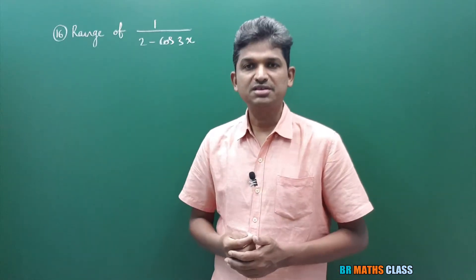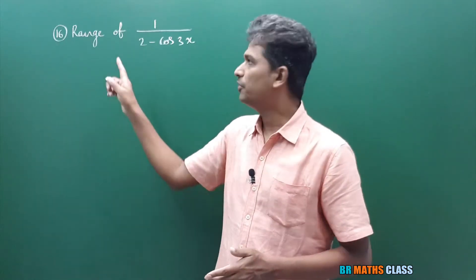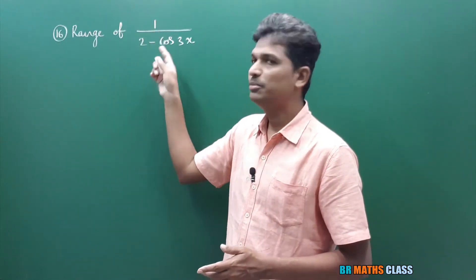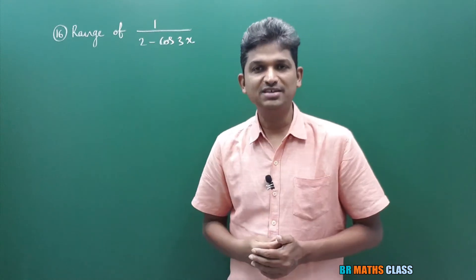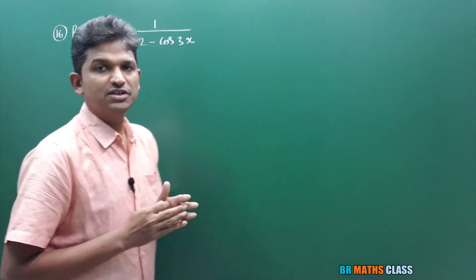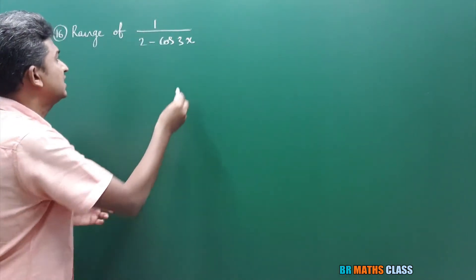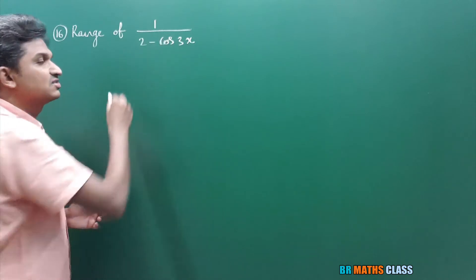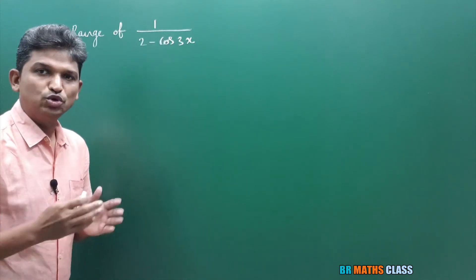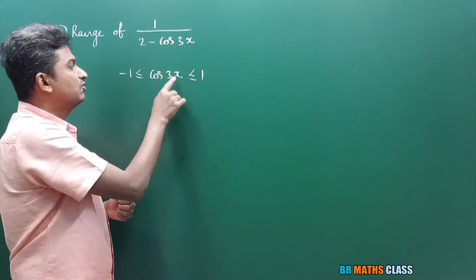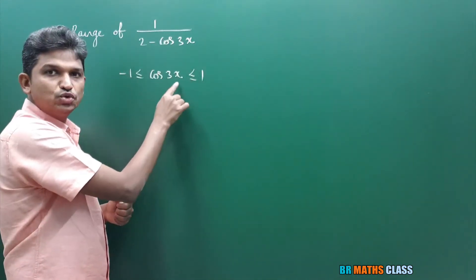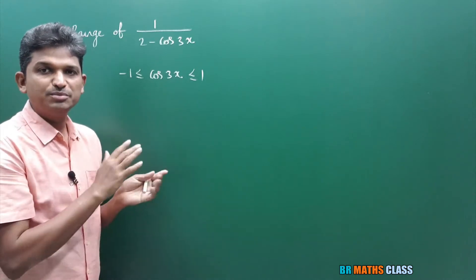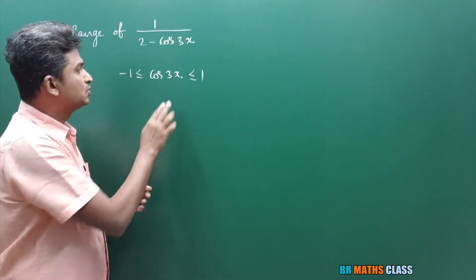You observe question number 16. We need to find the range of 1 divided by (2 minus cos3x). To find the range of this function, first I will try to find which interval 2 minus cos3x lies in. Whatever x value you take, cos x value lies between minus 1 and plus 1.